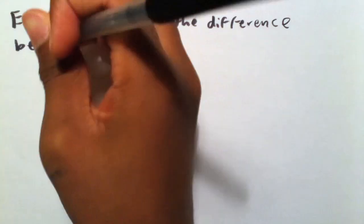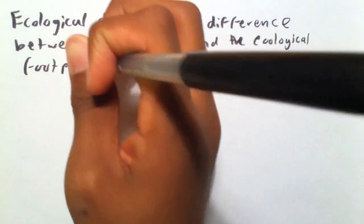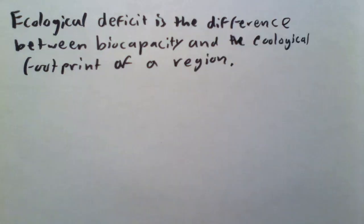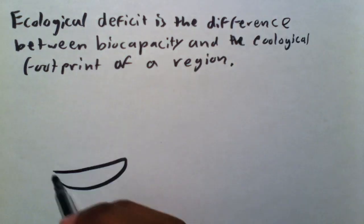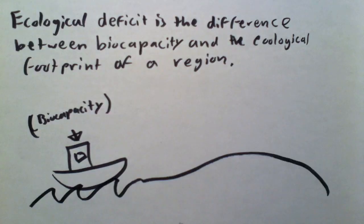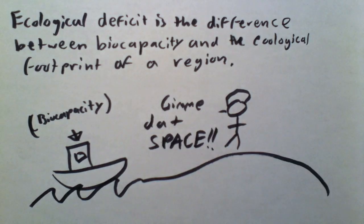Ecological deficit is the difference between bio-capacity and ecological footprint of a region. If there is a deficit, that means that the area in deficit is importing bio-capacity through trading.